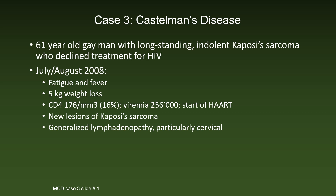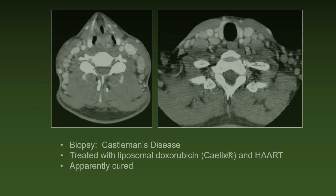The next patient was a 61-year-old gay man with a long-standing indolent Kaposi's sarcoma, who declined treatment for HIV. In July and August of 2008, he felt fatigued, had fever, had a weight loss of 5 kg, a CD4 count below 200 with elevated viremia, and started highly active antiretroviral therapy. New lesions of Kaposi's sarcoma appeared with generalized lymphadenopathy, particularly cervical. In the CT scans, you appreciate the enormous number of lymph nodes, all increased in size. One of these was biopsied and the diagnosis was Castleman's disease.